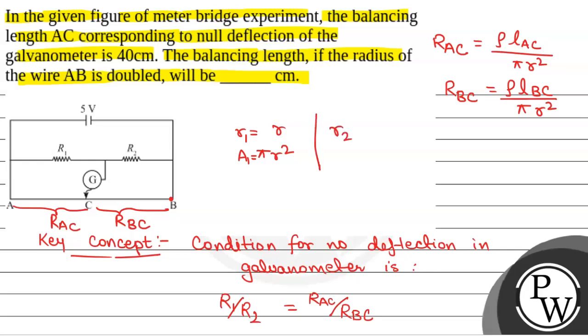Now if the radius of the wire is doubled, so if we take R2 is equal to 2R, so A2 will be equal to pi into 2R square, that will be equal to 4 pi R square.